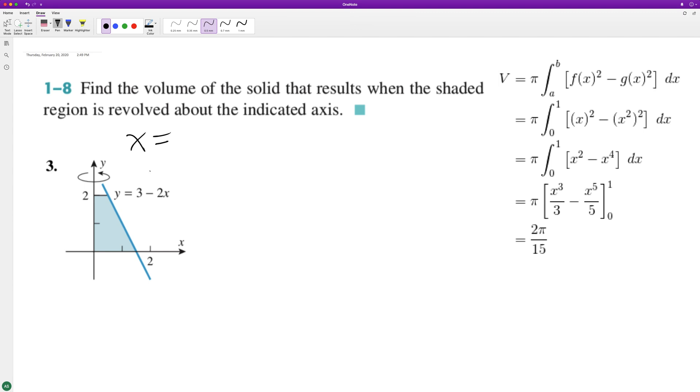So we get x is equal to 3 minus y over 2. The reason it switches like that is because I divided by a negative 2.